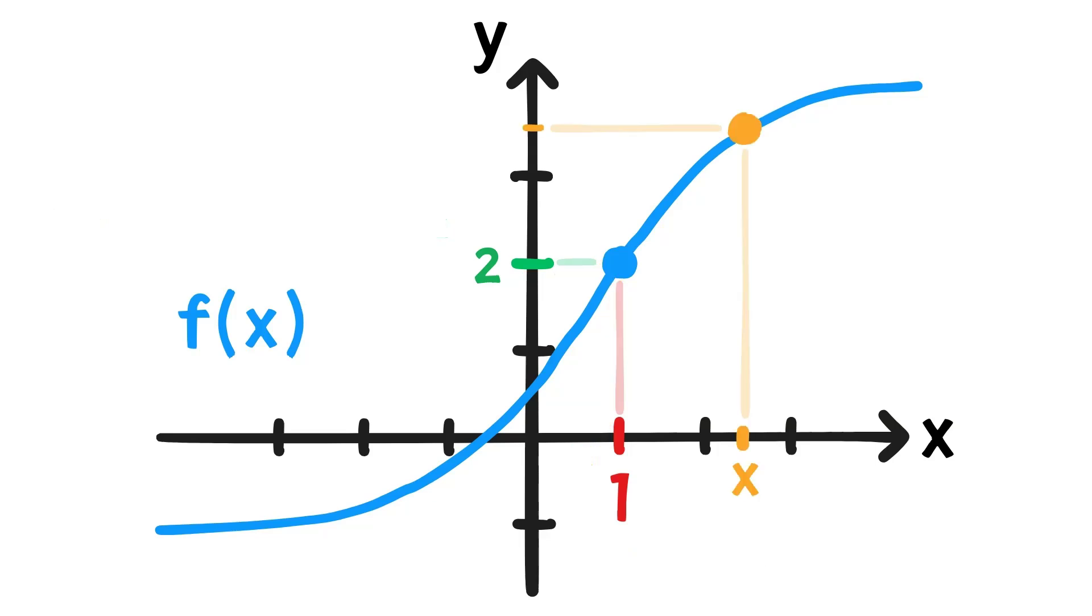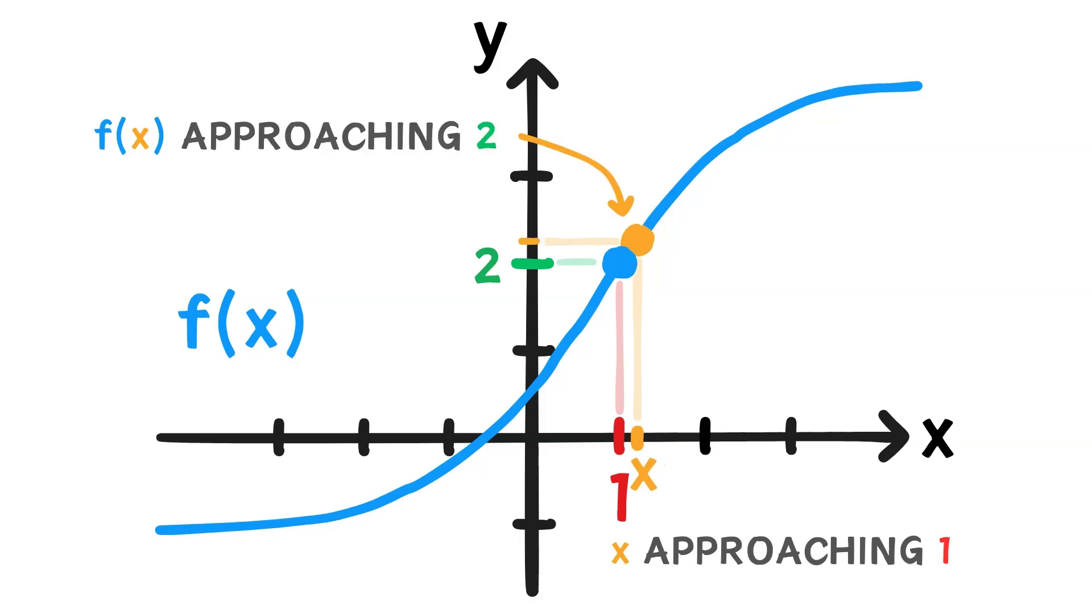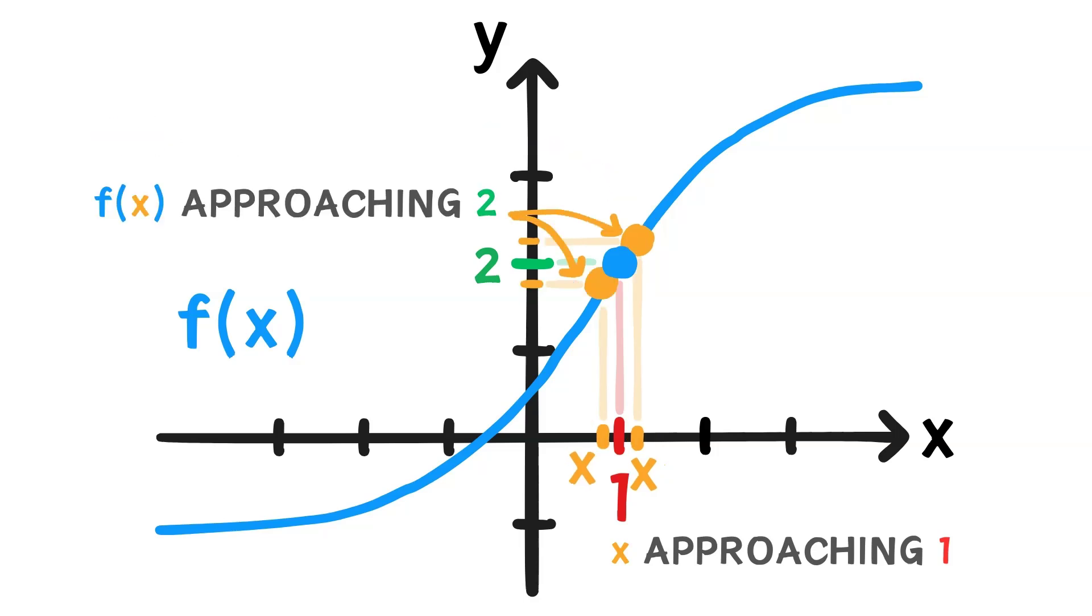Now, what about from the right? As x approaches 1 from the right, f of x approaches 2 as well. So we see that from both the left and the right, as the x value gets infinitely closer and closer to 1 from either side, f of x seems to approach 2. This is called a limit.